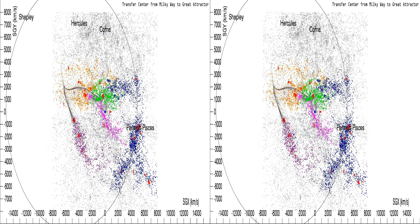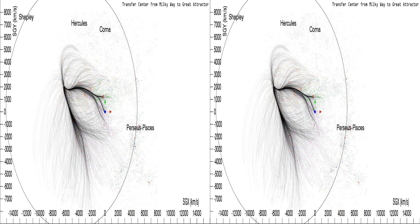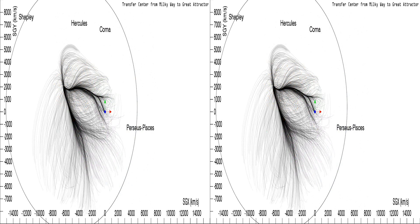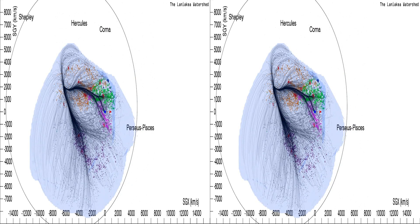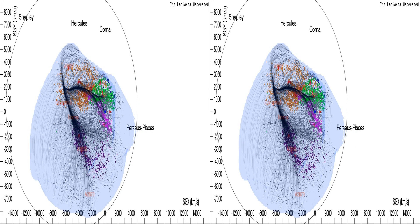We now impose a new centre and radius on the Wiener filter density field, and the velocity flow lines are restricted to the watershed of this basin of attraction. Galaxies from the redshift catalogue are again superimposed with colours distinguishing separate major features.